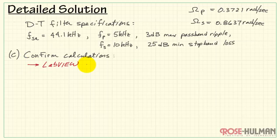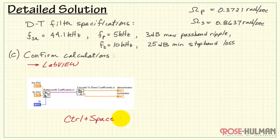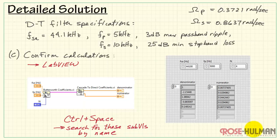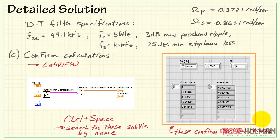Moving to Part C, we confirm the calculations in LabVIEW using two VIs from the signal processing palette. The Butterworth Coefficients VI accepts the sampling frequency, passband frequency, and filter order of 4. A sub-VI performs the cascade-to-direct coefficients conversion, allowing us to examine the denominator and numerator coefficients. You can find these sub-VIs by typing Control+Space in LabVIEW. The front panel results show that the denominator and numerator coefficients match the earlier results from Part A quite nicely.